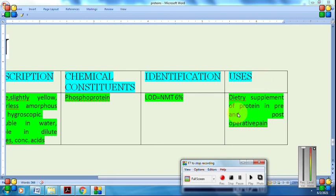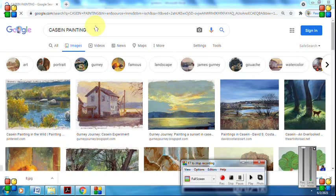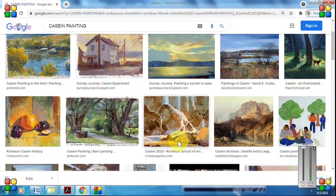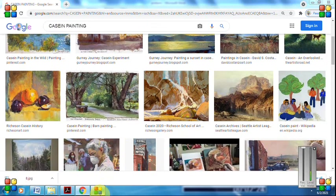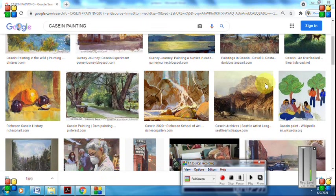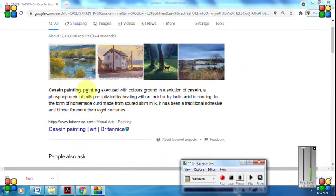In industry, it is used in sizing of textiles and paper, and as an adhesive. You might be wondering why I'm showing you these painting photographs. What is the connection to our topic on proteins, specifically casein protein obtained from milk? I'm showing this slide because there is casein painting. This painting is executed with colors ground in the solution of casein. We make colors using a solution of casein.